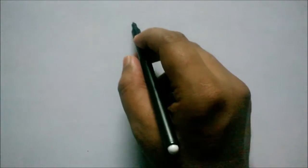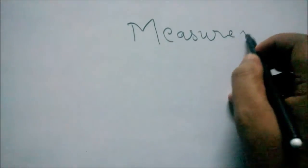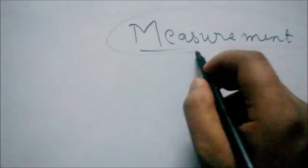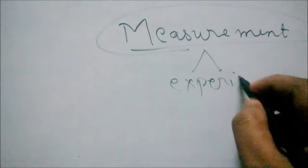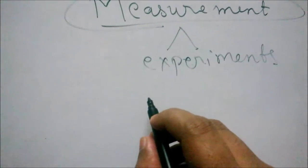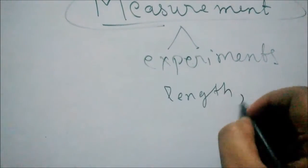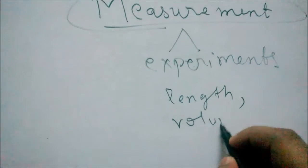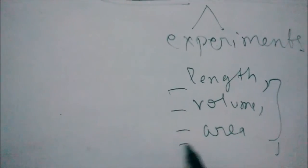Hey guys, welcome. Today we are going to learn how the measurement system came into existence. We use measurement systems for practically everything, and without measuring we cannot proceed with experiments. We measure length, we measure volume, we measure area, and many other things.